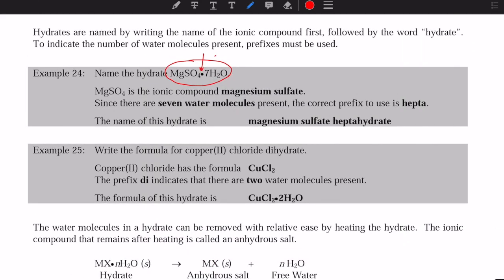For example, going back to our MgSO4, we would call it magnesium sulfate because that's the name of the ionic compound. Then you look at 7 here, and that would be hepta. The ending is always hydrate because that's what water is. So it's magnesium sulfate heptahydrate.